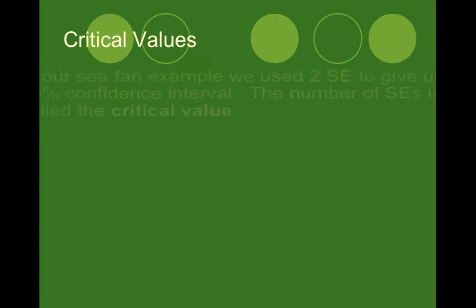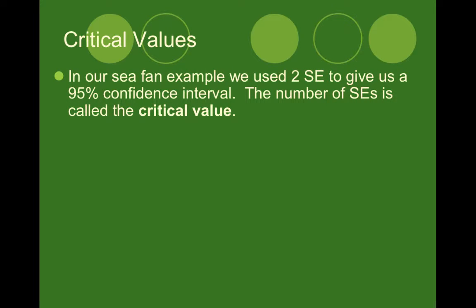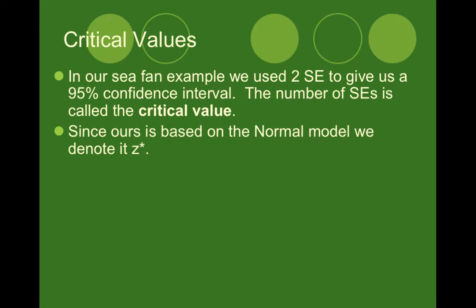This means that we actually have to use critical values. In our CFAN example, we used two standard errors to give us a 95% confidence interval. The number of standard errors — that two — is called the critical value. However many standard errors you are from your center value, your mean or your proportion, that's your critical value. Since ours is based on the normal model, we denote it with a Z and an asterisk, because that two is telling us we're two standard errors away, and the number of standard errors we are away is our Z score.